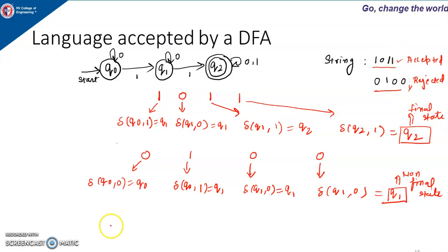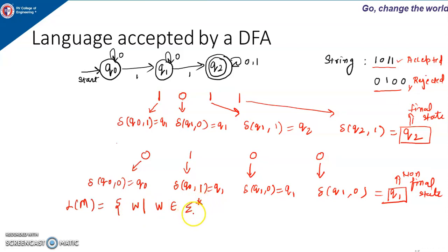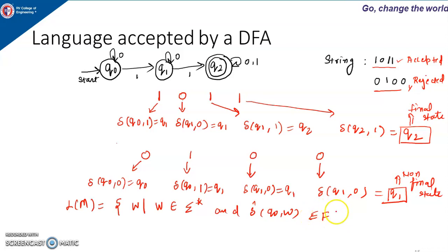So what will be the definition of a language? The language of a machine will be represented by L and it will be the set of all strings W where W belongs to sigma star. Sigma star is the set of all possible strings of all lengths, and delta hat of Q0 and W belongs to F. This delta hat is nothing but the extended transition function.